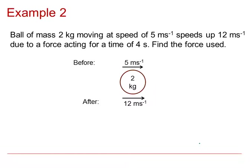Example 2: a ball of mass 2 kilograms is moving at a speed of 5 metres per second when it speeds up to 12 metres per second due to a force acting for a time of 4 seconds. Find the force acting. The impulse will be to the right because it's made the ball speed up from 5 to 12 metres per second, so I label my impulse I to the right. Since impulse equals force times time, the impulse I equals the force F times 4, so the impulse is 4F Newton seconds.